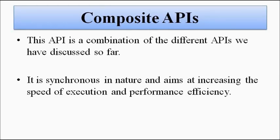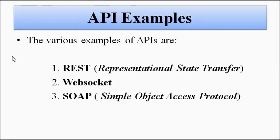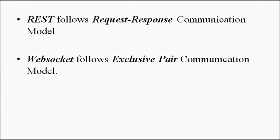Common examples of Application Program Interfaces include REST (Representational State Transfer), WebSocket, and SOAP (Simple Object Access Protocol) — though there are many more. The REST API follows the request-response communication model, where the client sends a request to the server for particular information or data, and the server responds with the necessary data — very similar to online search engines.